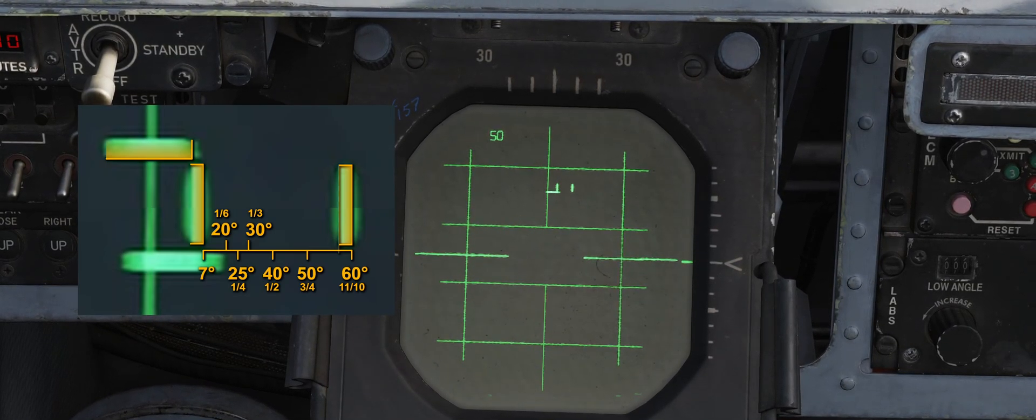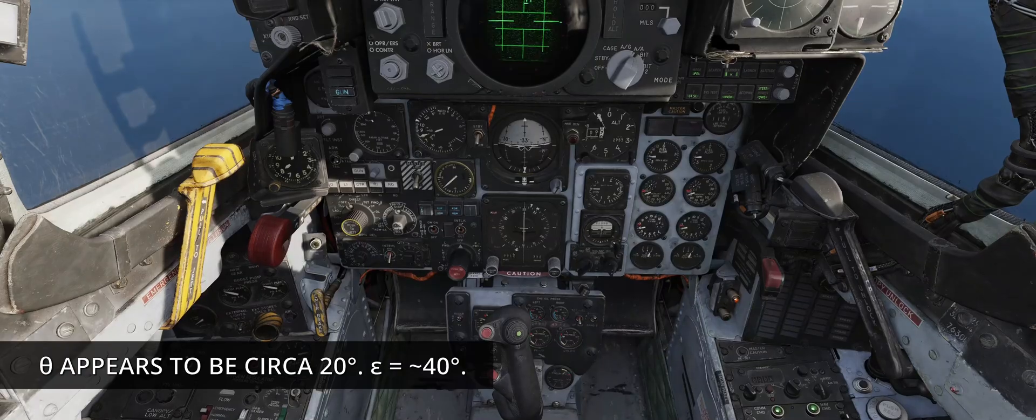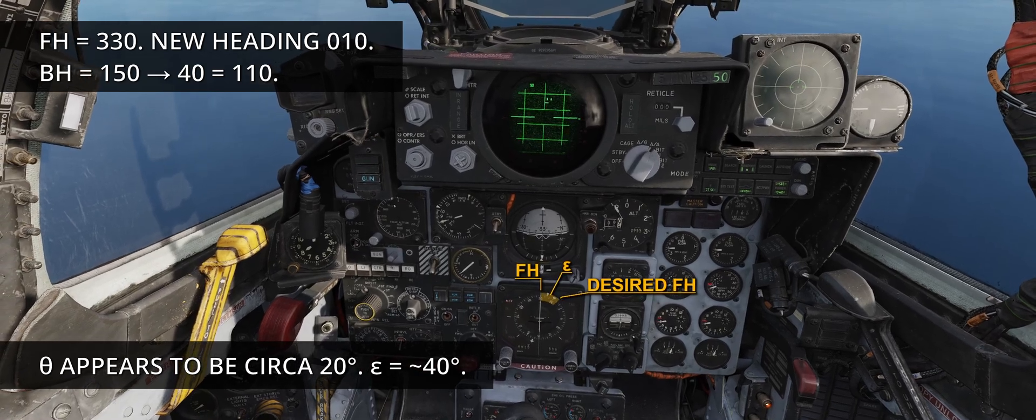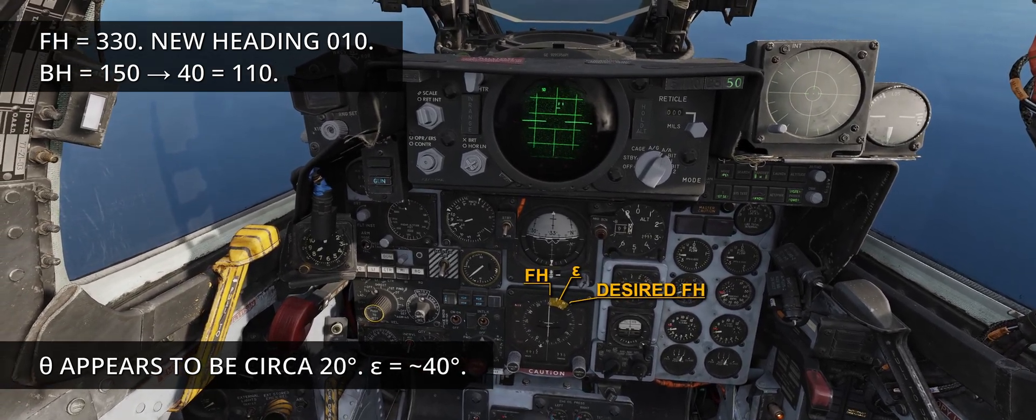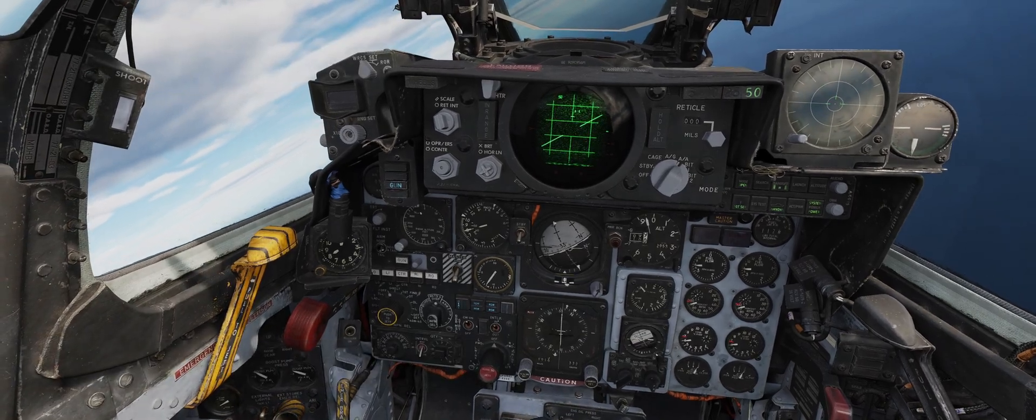Theta appears to be slightly less than 20 degrees, therefore epsilon is circa 40 degrees. The current fighter heading is 330, so I turned 010. The direction depends on the location of the cold side of the radar scope. In this case, I turned towards the right.